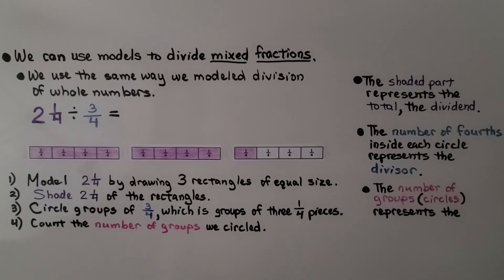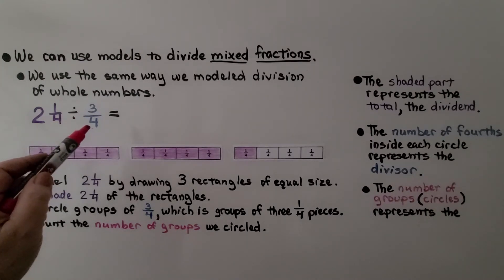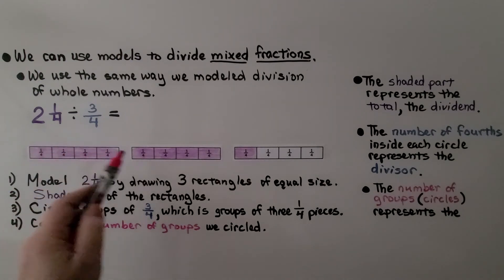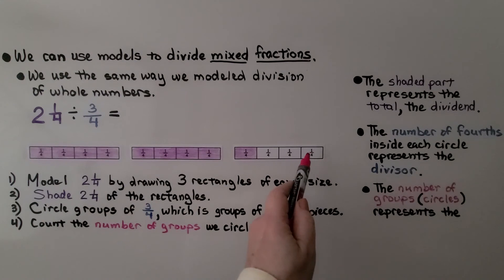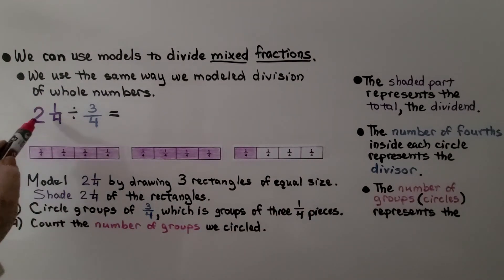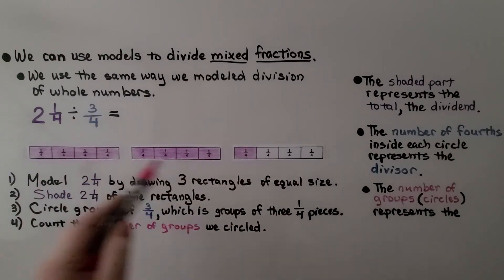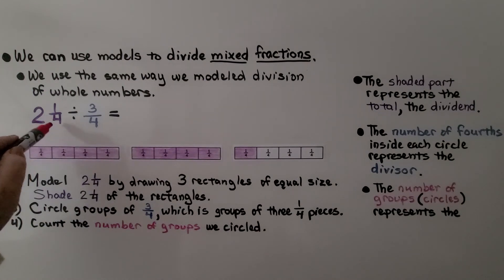We can use models to divide mixed fractions. We use the same way. We model division of whole numbers. Our equation is two and one-fourth divided by three-fourths. We take three whole rectangles. Because we have two and one-fourth, we round up to the next nearest whole number. That would be three.